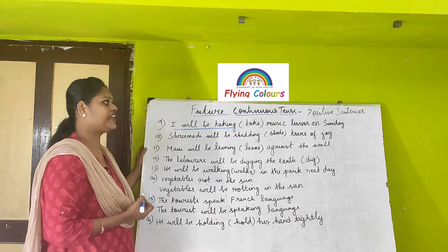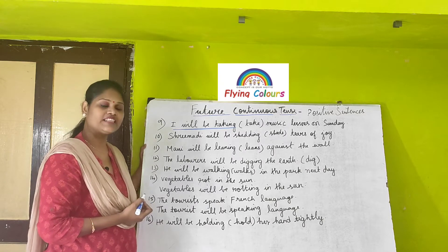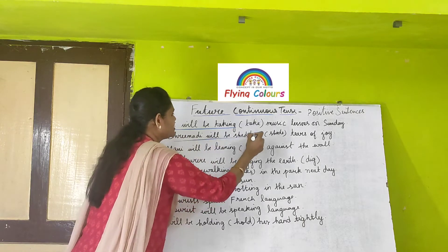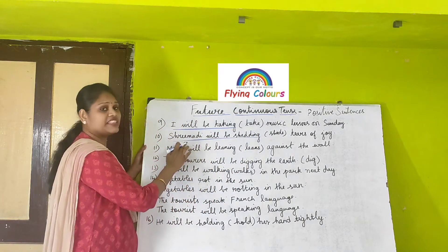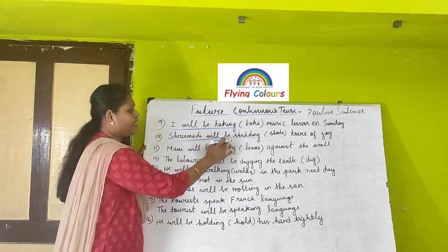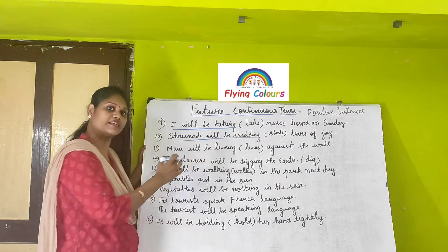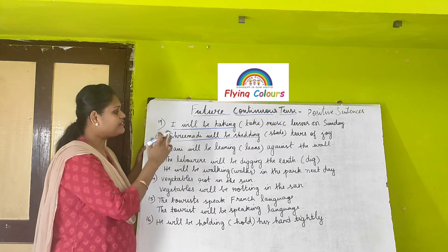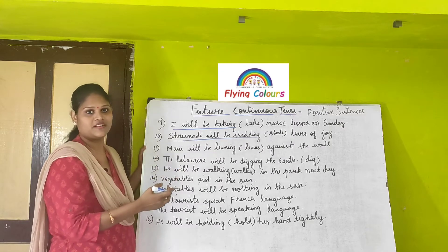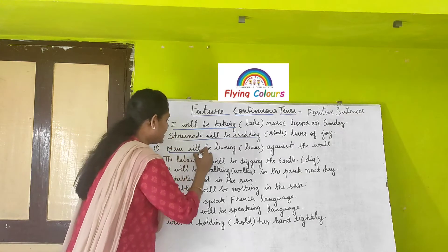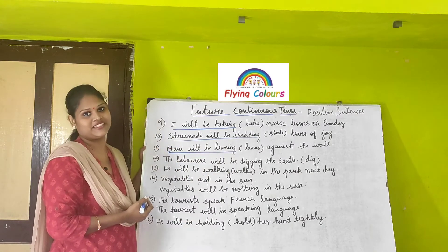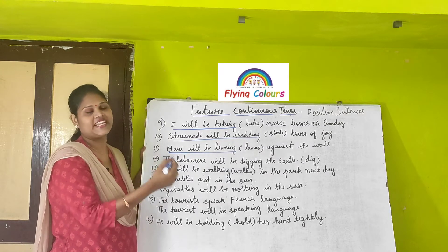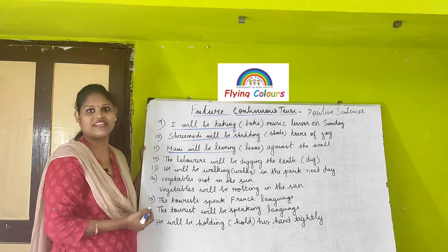Next: 'Shreemadhi will be shedding tears of joy.' The main verb is 'sheds,' and 'shedding' is the present participle. Shreemadhi is the subject, plus will plus be plus shedding. Then: 'Money will be leaning against the wall.' Money is the subject, plus will plus be plus 'leaning' as the present participle. 'Money will be leaning' is the future continuous tense.